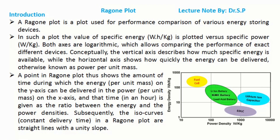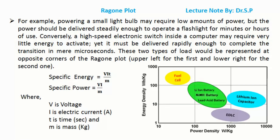Subsequently, the isocurves of constant delivery time in the Ragone plot are straight lines with a unity slope. For example, powering a small light bulb may require low amounts of power, but the power should be delivered steadily enough to operate a flashlight for minutes or hours of use.